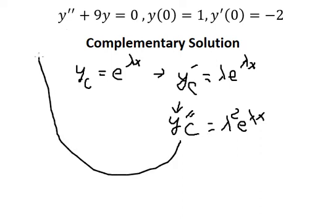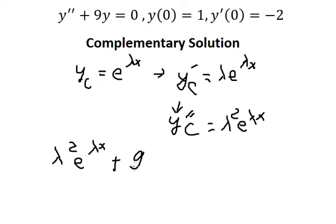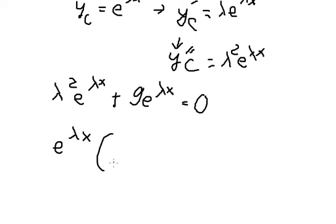So we substitute these into the equation. We have lambda squared e to the power of lambda x plus 9 e to the power of lambda x equals zero. So we can do factorization: e to the power of lambda x multiplied by lambda squared plus 9 equals zero.